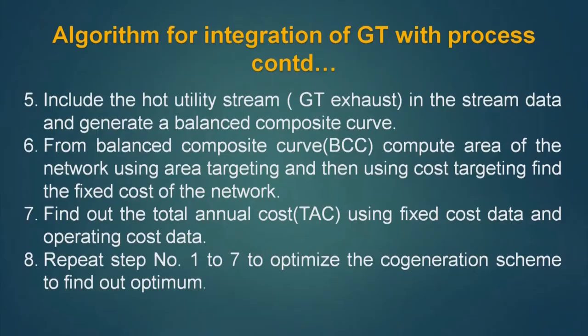Find out the total annual cost using fixed cost data and operating cost data. Operating cost will obviously be the cost of hot utility and cold utility, and we can also use the pressure drop data. Repeat steps 1 to 7 to optimize the cogeneration scheme. We can have different cogeneration schemes with different temperatures of the exit gas, and for all those techniques we have to find out the TAC value to find out the optimum.